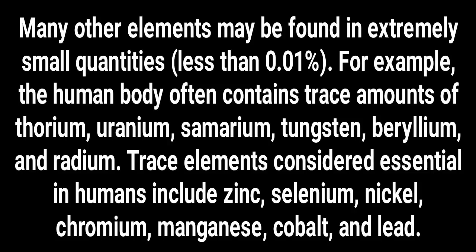Many other elements may be found in extremely small quantities — less than 0.01 percent. For example, the human body often contains trace amounts of thorium, uranium, samarium, tungsten, beryllium, and radium. Trace elements considered essential in human health include zinc, selenium, nickel, chromium, manganese, cobalt, and lead.